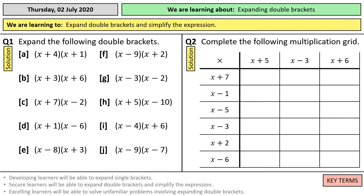There's a set of questions for you to do here. Question one is just multiplying out those pairs of brackets. Question two is multiplying each of those — think of them as brackets — so you would do x plus 7 times x plus 5, x plus 7 times x minus 3, x plus 7 times x plus 6. That will give you a lot of good practice on multiplying out double brackets. Pause the video and have a go at questions one and two.